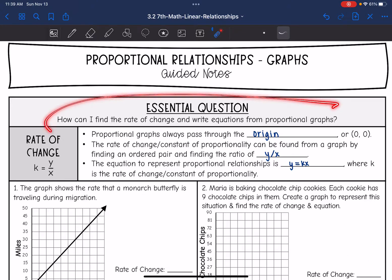We're going to answer the question, how can I find the rate of change and write equations from proportional graphs? So proportional graphs always pass through the origin or zero, zero.